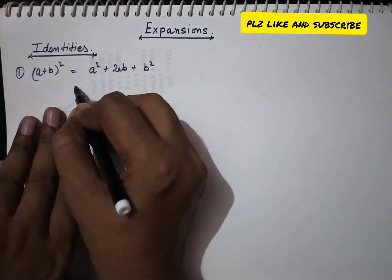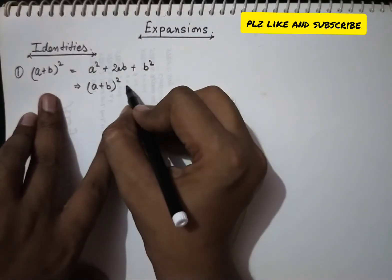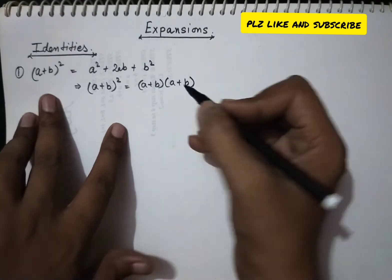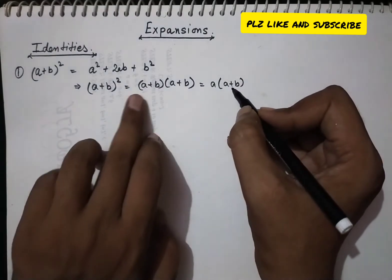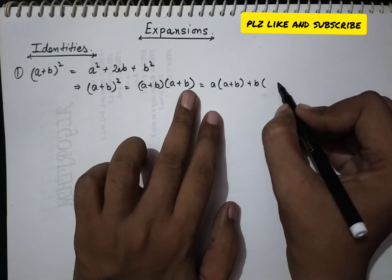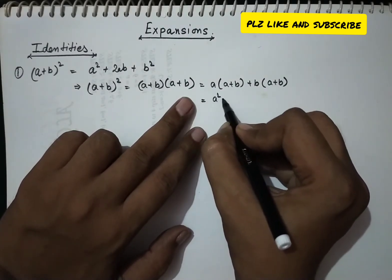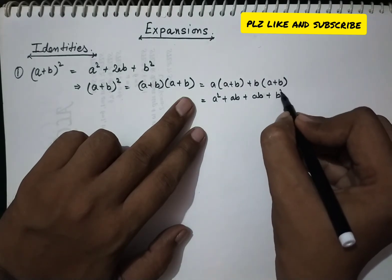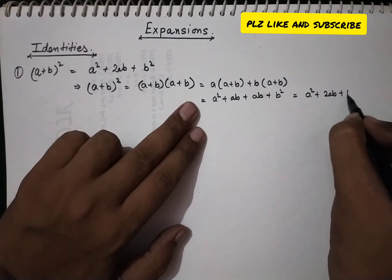To verify, (a + b)² can be written as (a + b) into (a + b). Expanding: a into (a + b) plus b into (a + b), which gives a² + ab + ab + b², and that equals a² + 2ab + b², which matches our identity.